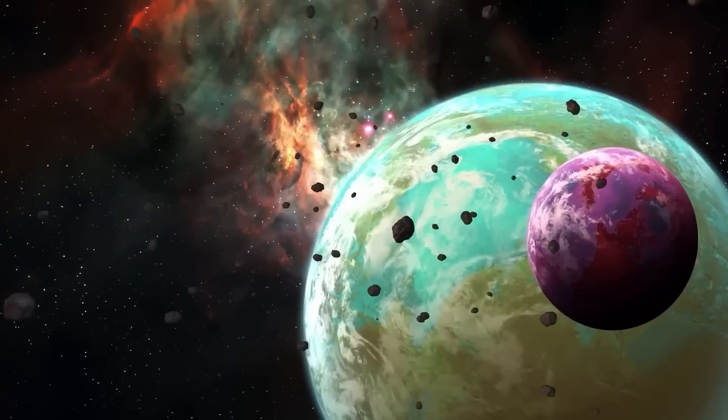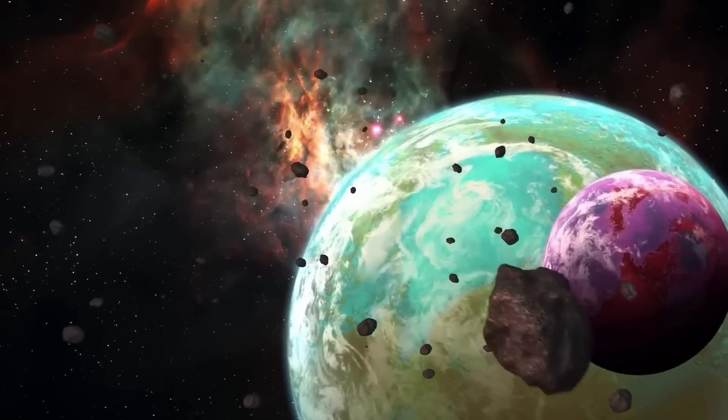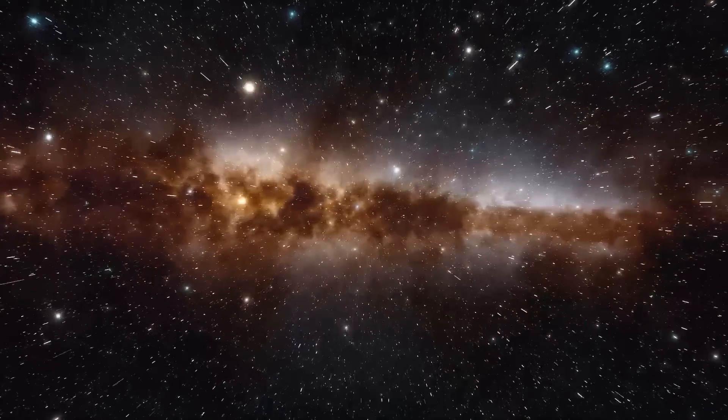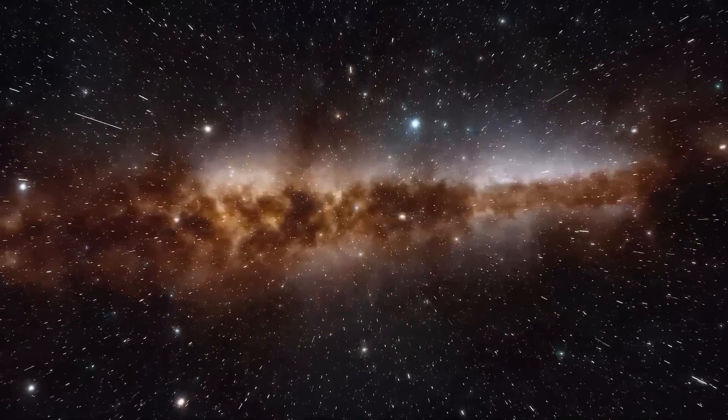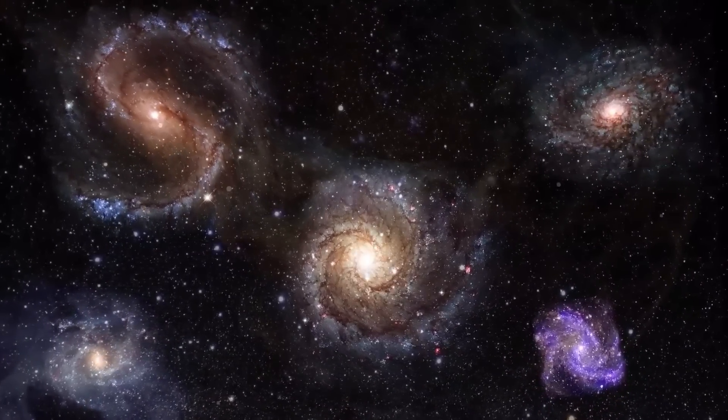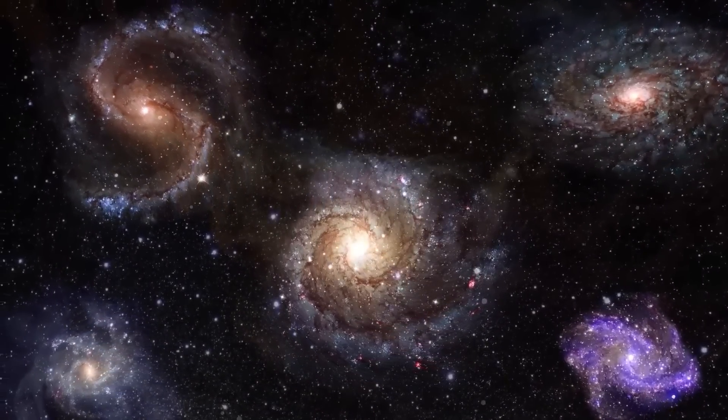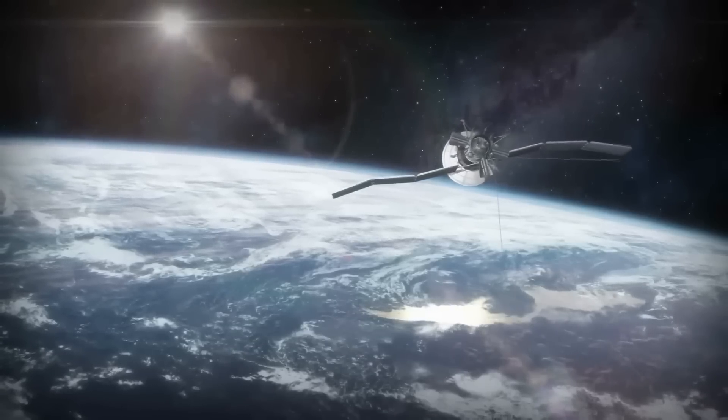The size of the observable universe is estimated to be around 93 billion light-years in diameter, which is much larger than the estimated size of the entire universe, which is thought to be around 13.8 billion years old. This is because the expansion of the universe has caused objects that were once close to each other to move farther apart, and the light from these objects has taken longer to reach us.